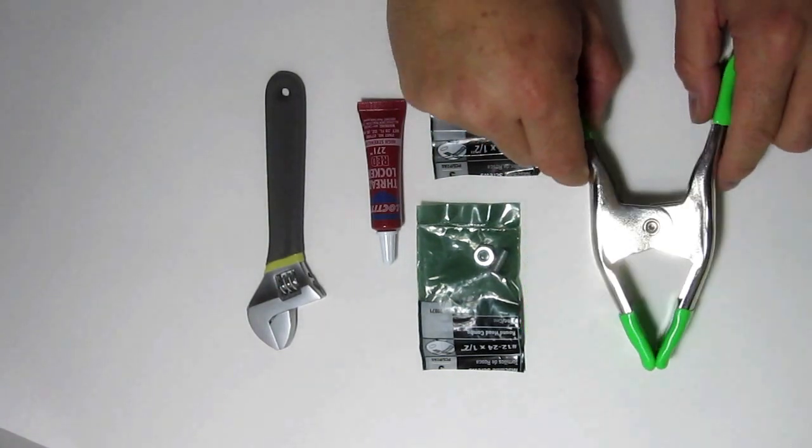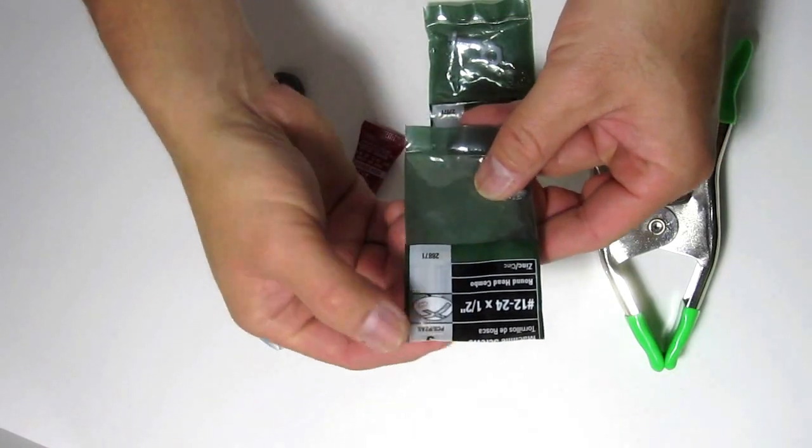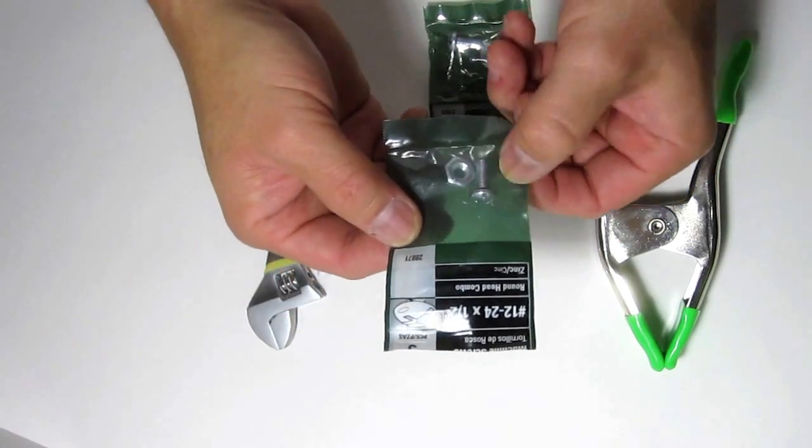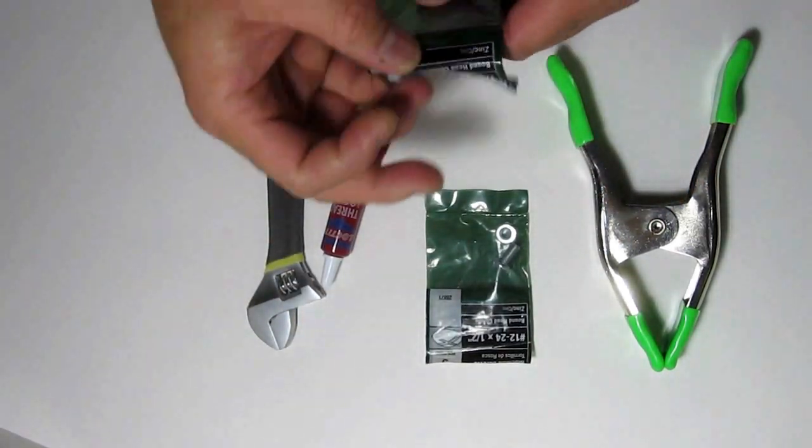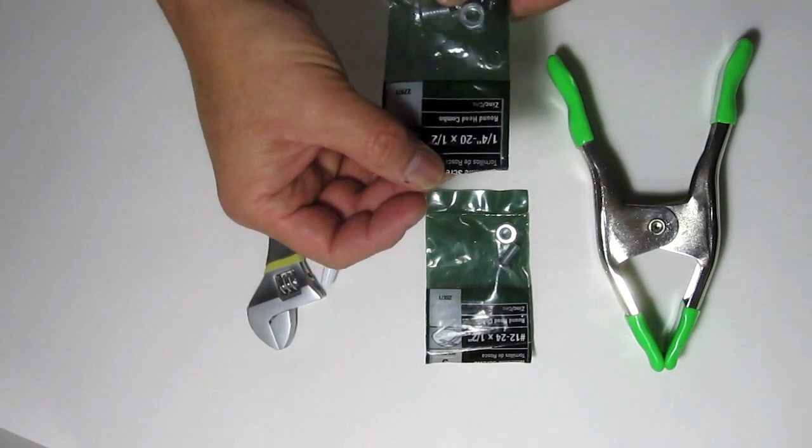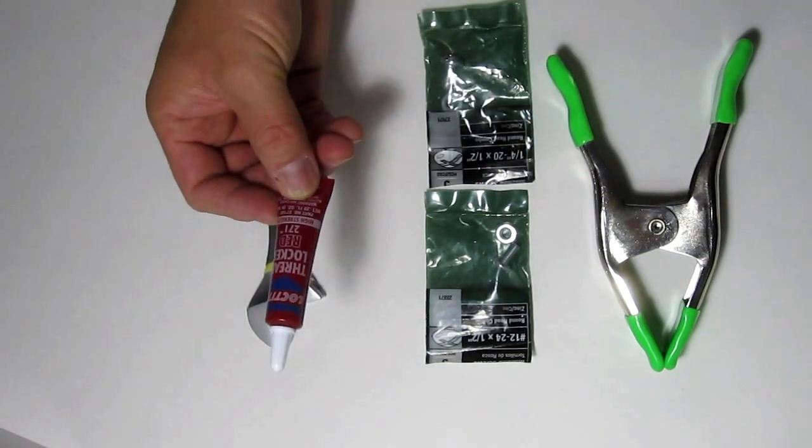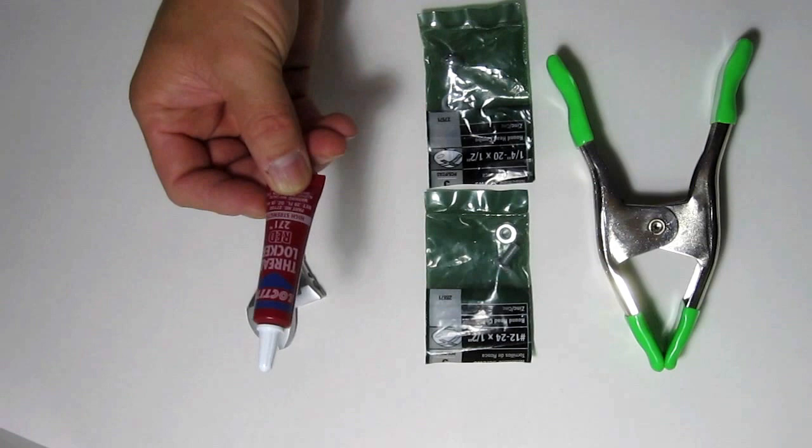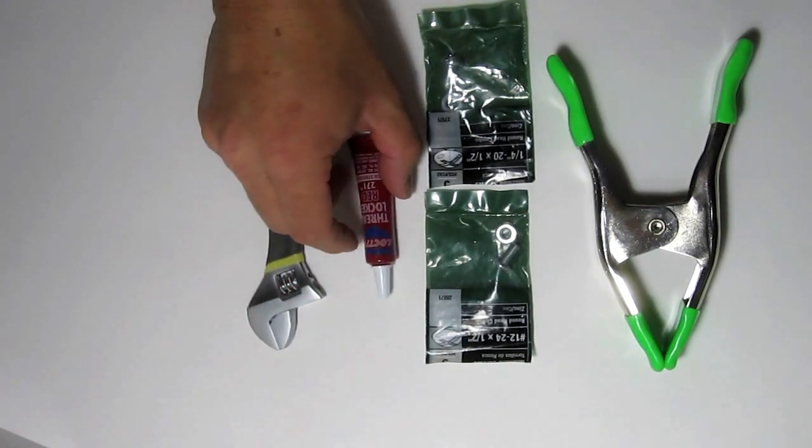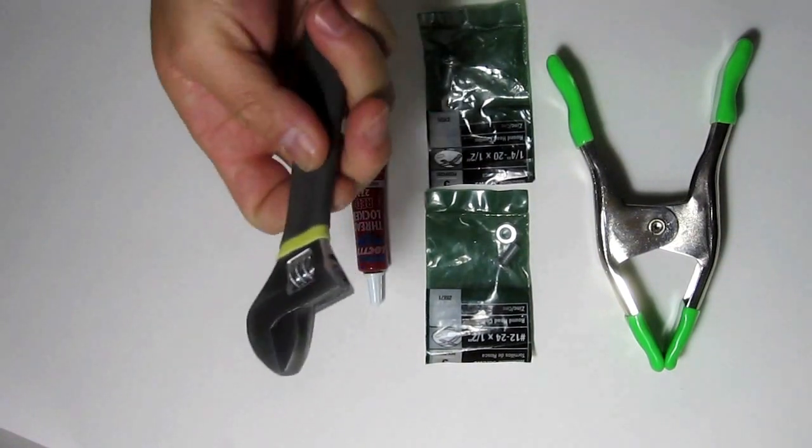What you need is a number 12-24 by half inch bolt and nut here, and also a quarter inch 20 by half inch—same thing. And I went and got this thread locker, Loctite red 271. I used to use this on a lot of screws in the past and it holds it perfectly. And a little crescent wrench.